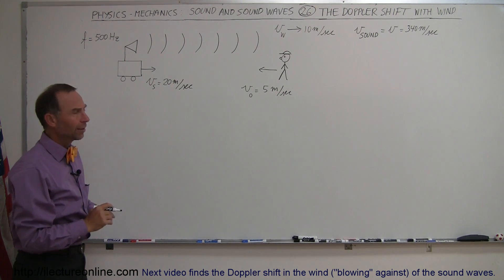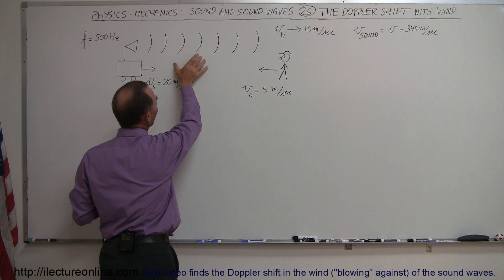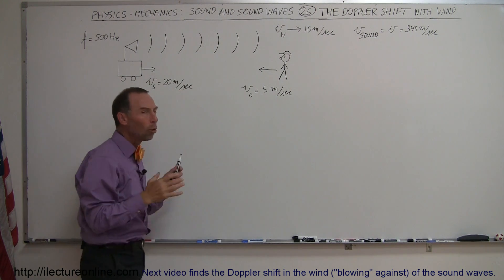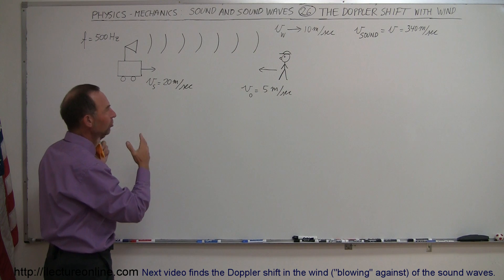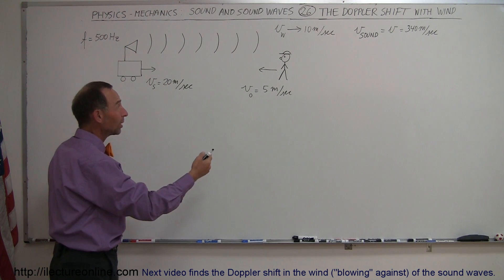So it turns out that wind actually causes the movement of the sound waves to be faster. The whole medium, all the air that carries the sound moves to the right, which has an effect of making the velocity of sound quicker.